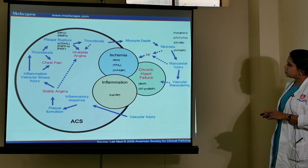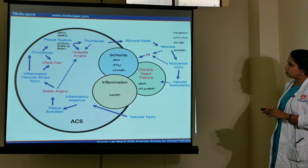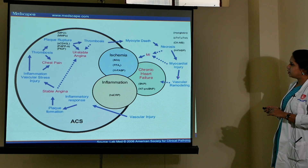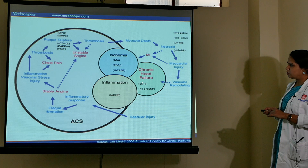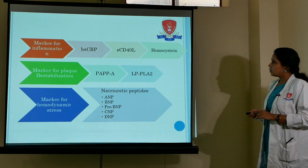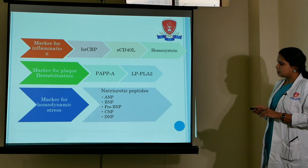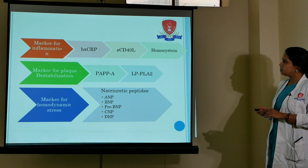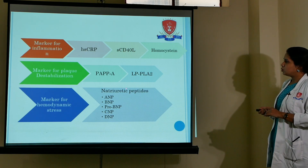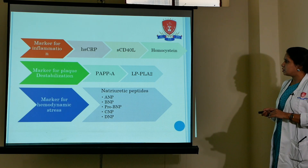This is again a reflection of the same process — how vascular injury is caused due to inflammation, ischemia, and ultimately leads to a series of events culminating in chronic heart failure. Further categorization of markers includes: markers of inflammation (CRP, hsCRP, CD40, homocysteine), markers of plaque destabilization, and markers of hemodynamic stress.